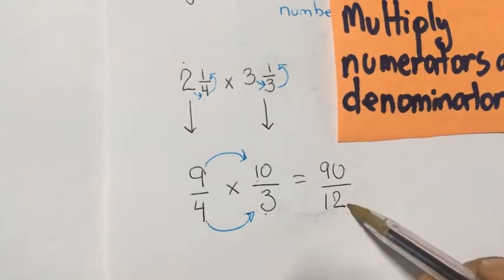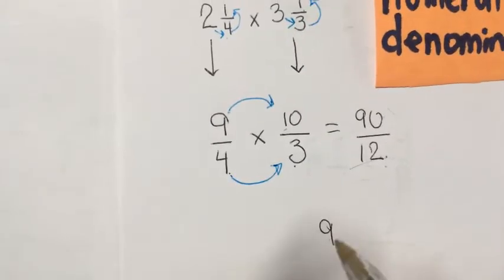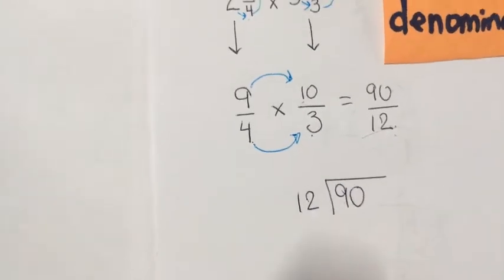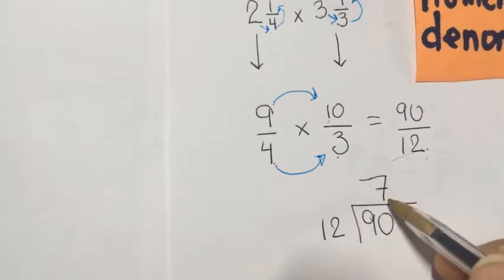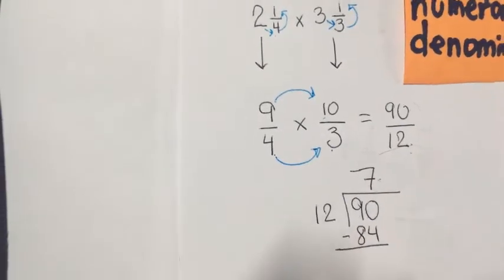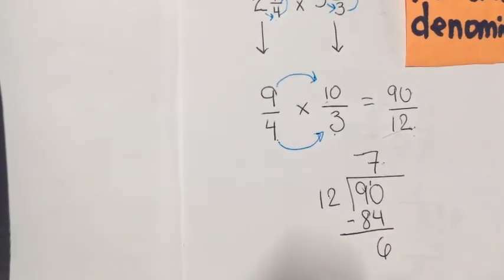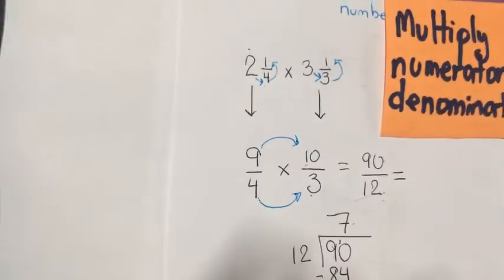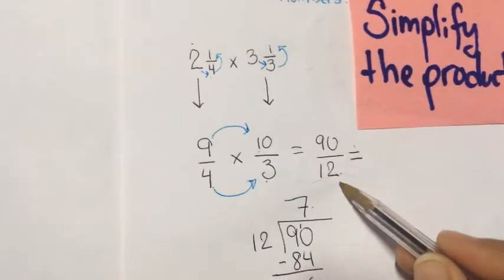We need to divide since it's an improper fraction: 90 divided by 12. How many times does 12 go into 90? Seven times. 7 times 12 is 84. Subtract: 90 minus 84 is 6. So we have 7 and 6/12.